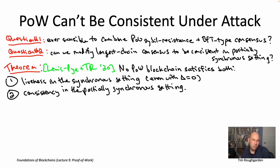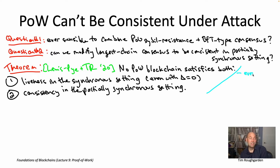The formal statement — perhaps to some extent folklore, but formally stated and proved in a paper of mine with Andrew Lewis-Pye from 2020 called 'Resource Pools and the CAP Theorem' — says that if you're using proof-of-work civil resistance, you have to choose between either having liveness in the synchronous setting or consistency in the partially synchronous setting. You cannot have both. In fact, this impossibility result holds even when none of the nodes are Byzantine — when all nodes are honest.